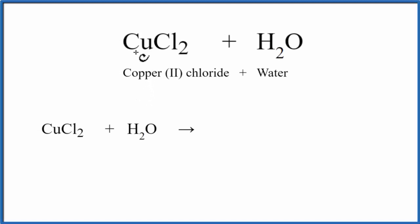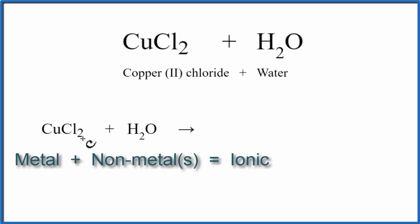In this video, we'll look at the equation for CuCl2 plus H2O, that's copper chloride plus water. Copper is a metal and chlorine is a nonmetal, so this is going to be an ionic compound.